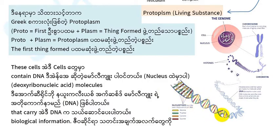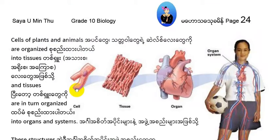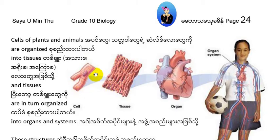In this picture, these are the cells found in the lung. There are cells within the nucleus. These cells can be found in tissues. Tissues form organs in the body.